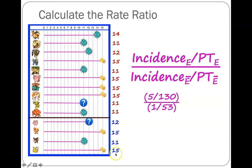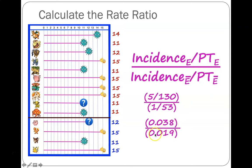The incidence of disease among the exposed is 5 cases over 130 person-days. Among the unexposed it's 1 case over 53 person-days. The rate of disease among the exposed is 0.038 cases per day; the incidence density rate among the unexposed is 0.019. When you compare those two rates you get a rate ratio of 2.0, sometimes called the incidence rate ratio.